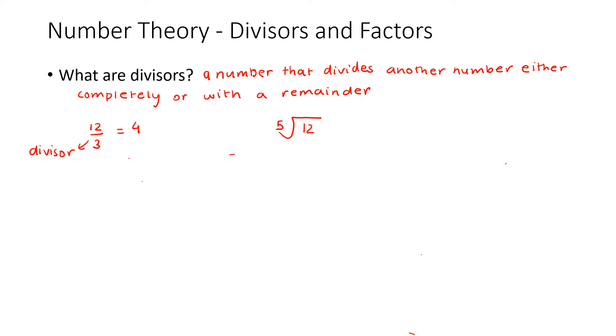Another example is if I do 12 divided by 5. 2 goes up there, 10, 2. So in this case, 5 is our divisor, this is our remainder, and this is our quotient.